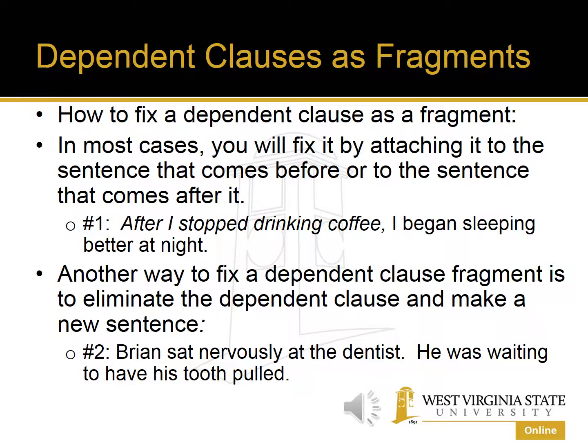Another way to fix a dependent clause fragment is to eliminate the dependent clause altogether and turn it into an independent clause by completing the thought, or by adding a subject or a verb — whatever is missing. By definition, a clause does have a subject and a verb, so if it's a dependent clause, it's going to have a subject and a verb, but we may need to add an object or something else to make the thought complete.